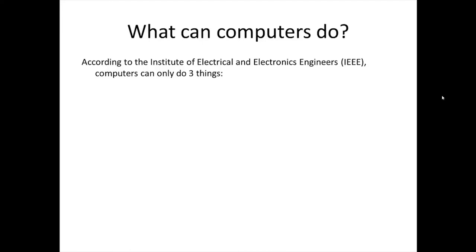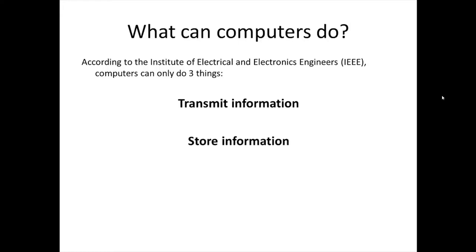Regardless of the type of computer — mainframes, personal computers, or the newest mobile devices such as smartphones and tablets — according to the IEEE (the Institute of Electrical and Electronics Engineers), the global organization responsible for establishing standards for electronic hardware, when distilled to the most essential characteristics, computers can only do three things: transmit information, store information, and process information. These three characteristics not only define what a computer can do, they also determine to some extent what can be done with computers and other derivative technologies.